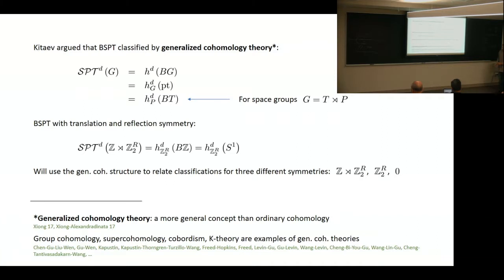What we'll do is to use the claim at the top to relate classifications for three different symmetries: translation semi-direct reflection, only reflection, and no symmetry at all.